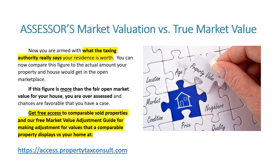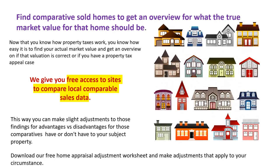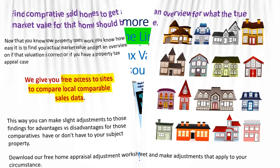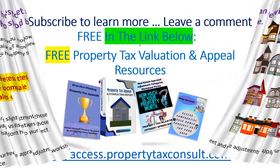The result might differ from what value similar sold homes fetched in the residential housing market. Find comparative sold homes to get an overview of what market value that home should fetch. We'll give you free access to sites to compare local comparable sales data. This way you can make slight adjustments to those findings for advantages versus disadvantages those comparatives have or don't have relative to your subject property. Download our free home appraisal adjustment worksheet and make adjustments that apply to your circumstance. Winning a property tax appeal provides you with a lower assessment year after year and saves you multiple thousands of dollars.